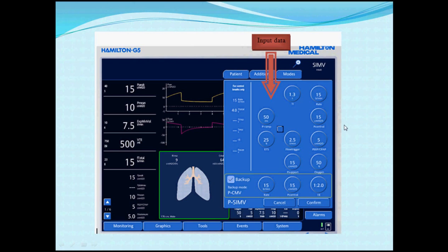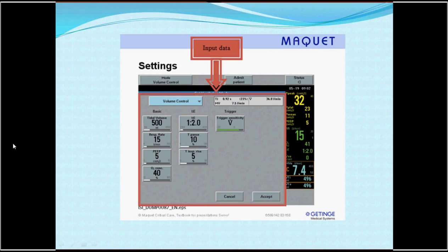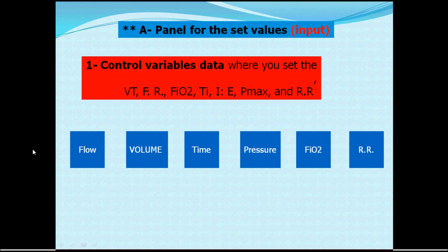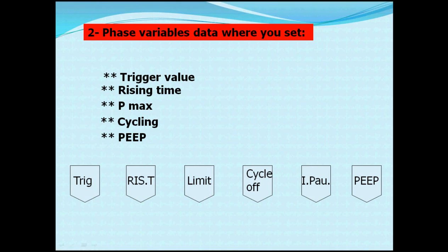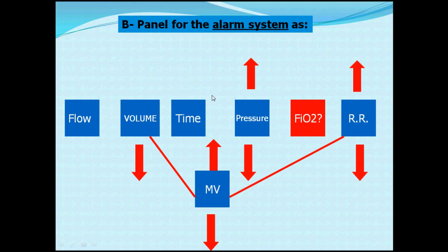Each ventilator has its own way of demonstrating the control panel. For example, the Hamilton ventilator shows the input data and output data separately. When setting control variables, you define flow, volume, time, pressure, FiO2, and respiratory rate according to the patient and mode. For phase variables, you define the trigger type — whether flow or pressure — the rising time, inspiratory limits, and cycle-off criteria. All these must be defined according to the mode of ventilation.